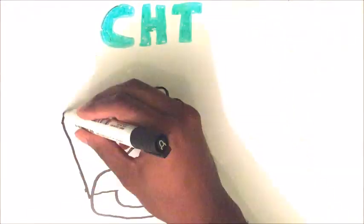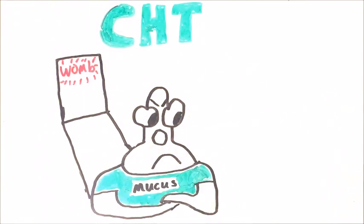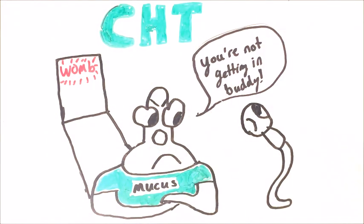The second method of action is the thickening of cervical mucus. This makes it hostile towards sperm, and more difficult for them to be able to get into the womb.